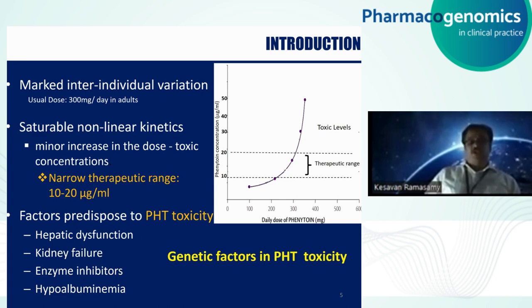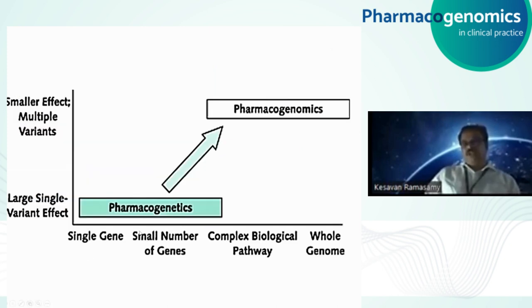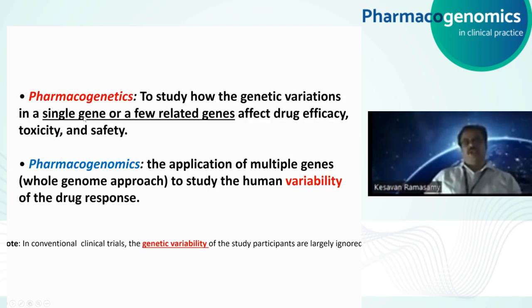The Human Genome Project kickstarted the field of pharmacogenomics. Pharmacogenomics deals with how genetic variation in a single gene or a few related genes affects drug efficacy or toxicity. Whenever it deals with pharmacogenetics, the focus is on a few genes or a single gene. Pharmacogenomics, on the other hand, is a whole genome approach to cover multiple variants.